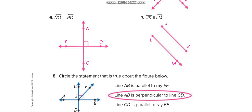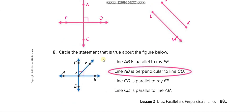Circle the statement that is true about the figure. 'Line AB is parallel to ray EF' — no, they are intersecting at E, so that's wrong. 'Line AB is perpendicular to line CD' — yes, AB and CD intersect at E forming a square corner, so this is correct. 'Line CD is parallel to ray EF' — no, that's wrong. The last option is also wrong.